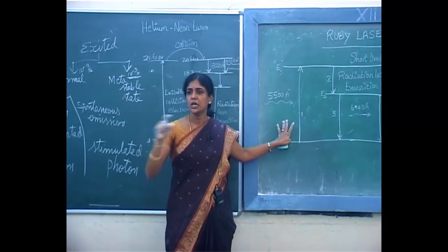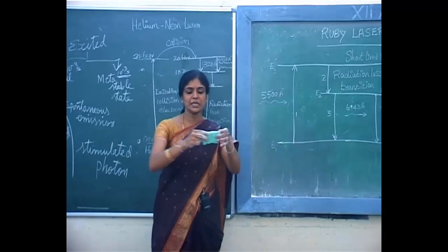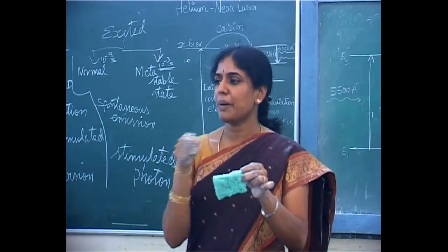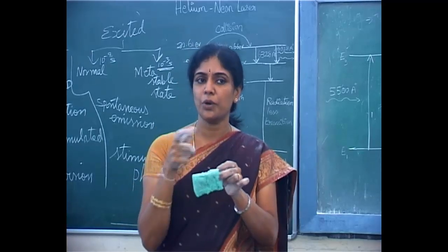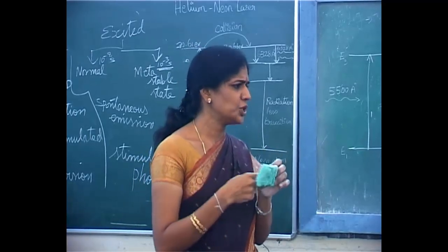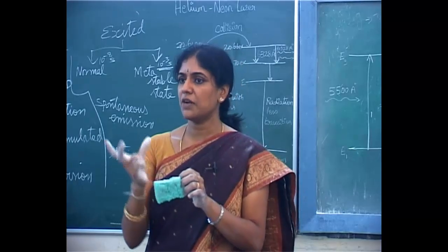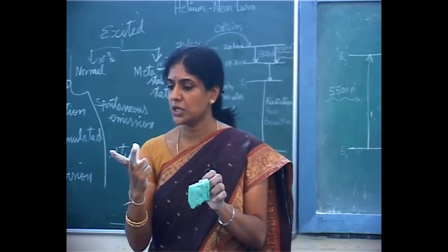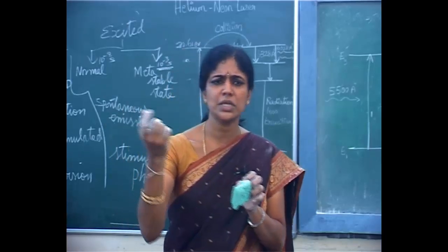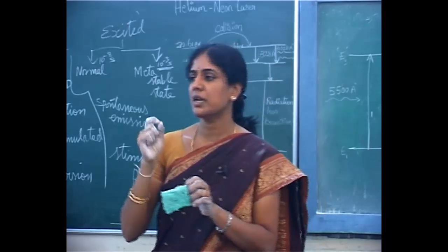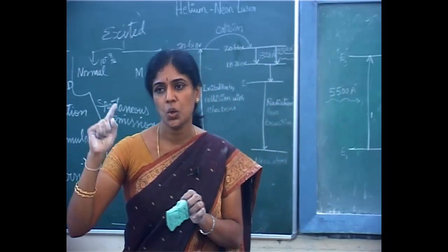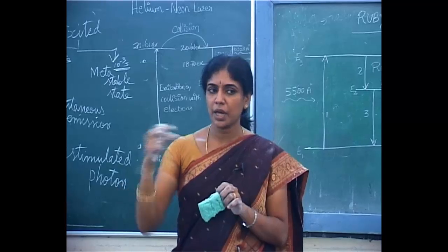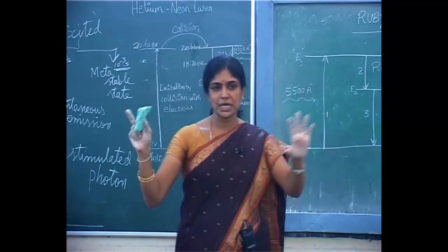Ruby laser is nothing but a single crystal. Its length will be more than its diameter. The ruby laser rod is wound with a xenon flash tube. The xenon flash tube provides the pumping action. The ruby rod is nothing but a single crystal of aluminum oxide, Al2O3, in which some of the aluminum ions are replaced by chromium ions. This is the construction of the ruby rod.